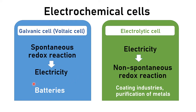The application of galvanic cells includes batteries, which come in different types with different reactions occurring between the electrodes — anode and cathode. The application of electrolytic cells includes the coating of metals onto objects and the purification of metals.